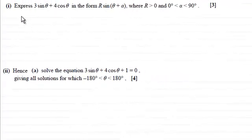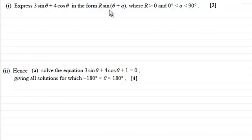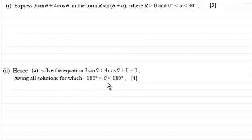In this first question we're asked to express 3 sin θ + 4 cos θ in the form r·sin(θ + α), where r is greater than zero and α is an angle between 0 and 90 degrees. Then we've got to solve the equation 3 sin θ + 4 cos θ + 1 = 0, giving all solutions for which θ is between −180° and 180°.